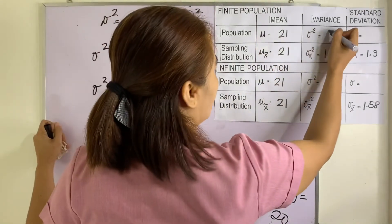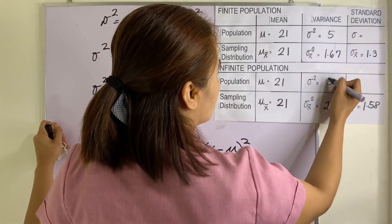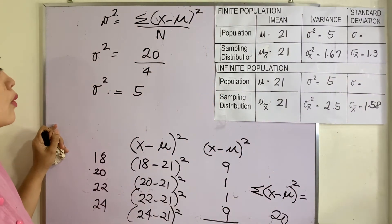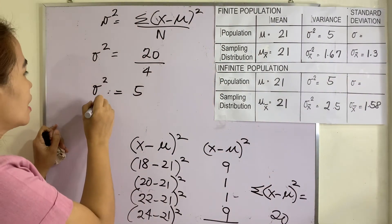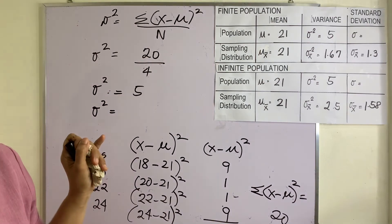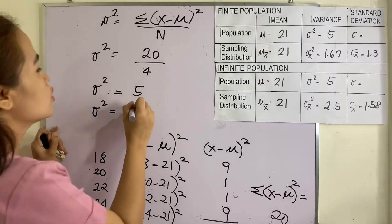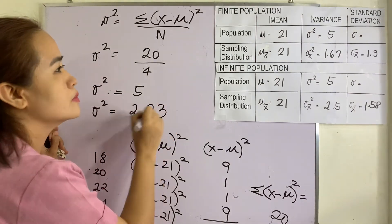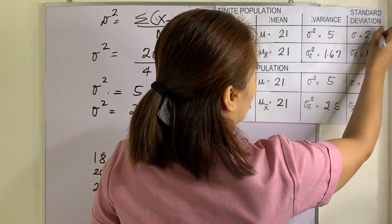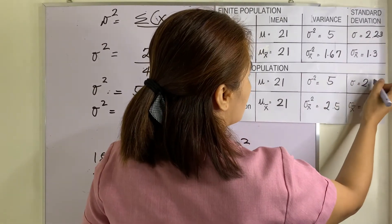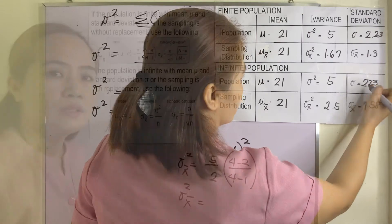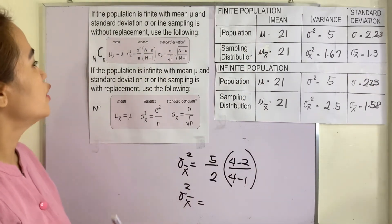The standard deviation is the square root of the variance, so the square root of 5 is 2.23. So the population standard deviation is 2.23.